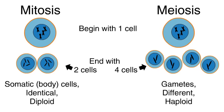Mitosis produces somatic, or body, cells, which are identical to each other and their parent cell, and are diploid. Meiosis produces gametes, which are different, and haploid.